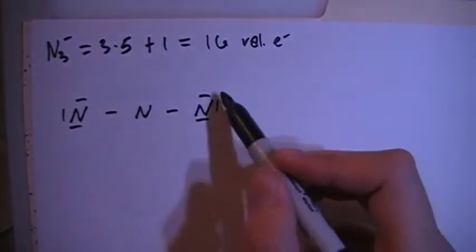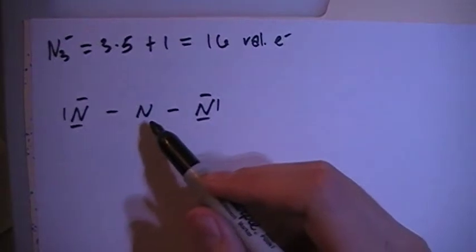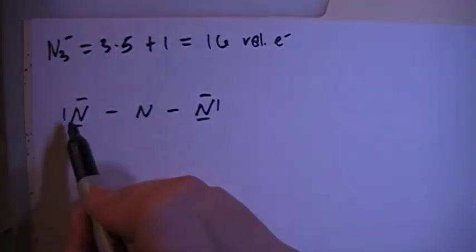So now there's 16 electrons here, there's 2, 4, 6, 8, 10, 12, 14, 16, but the central nitrogen does not have 8 yet, so that octet is not filled.